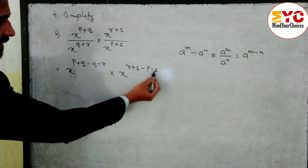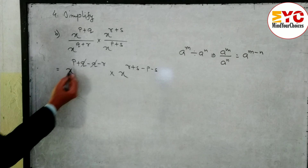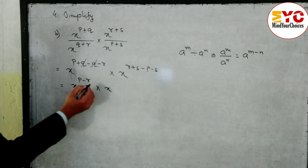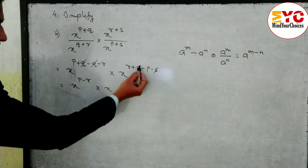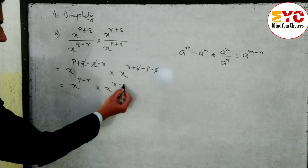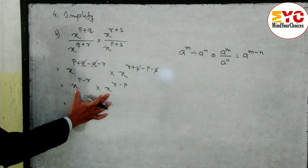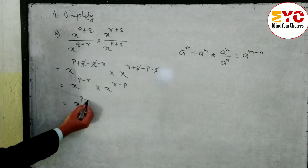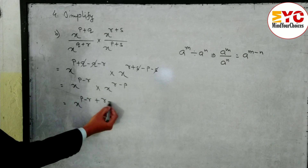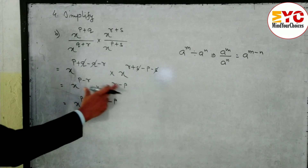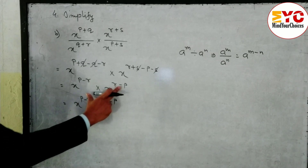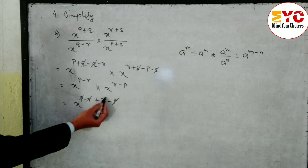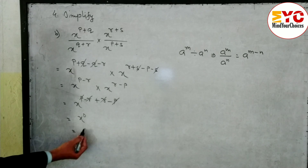Now q and q cancel, so remaining: x power (p minus r). Into x power — here s and s cancel, remaining: (r minus p). Again base same and in multiply we add the power: x power (p minus r) plus (r minus p). p and p cancel, r and r cancel, remaining: x power 0, which means 1.